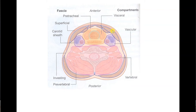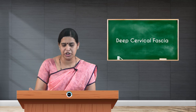In the same transverse section, the pre-tracheal layer is shown in orange, in front of the trachea enclosing the thyroid gland, and the pre-vertebral layer encloses the vertebral column region and the pre-vertebral fascia.